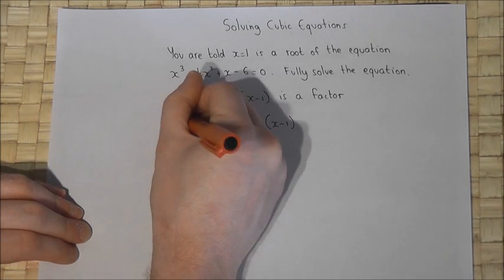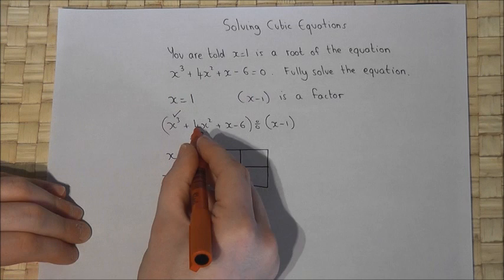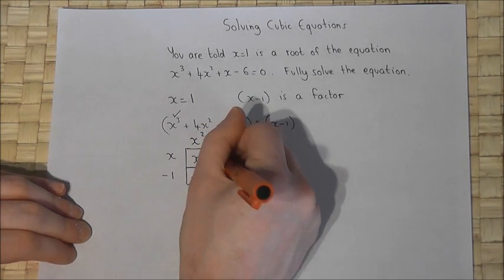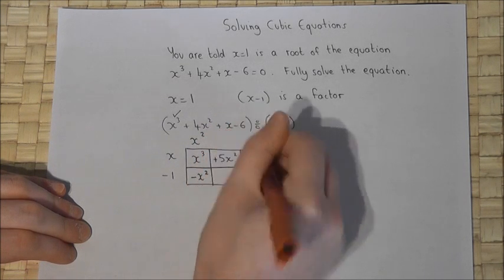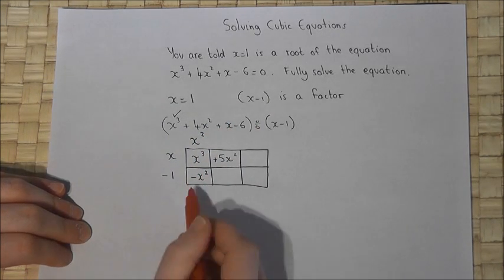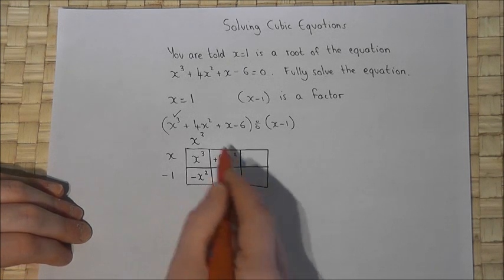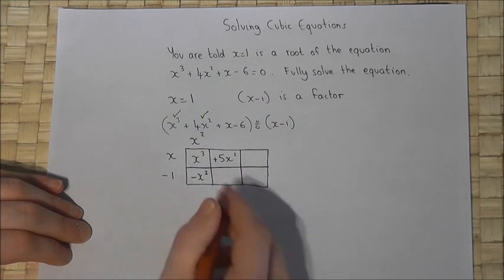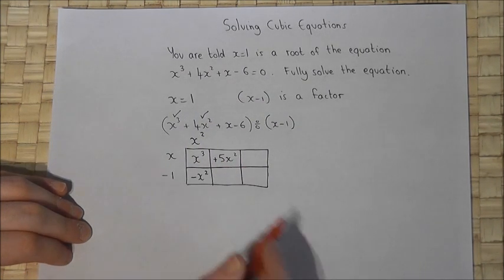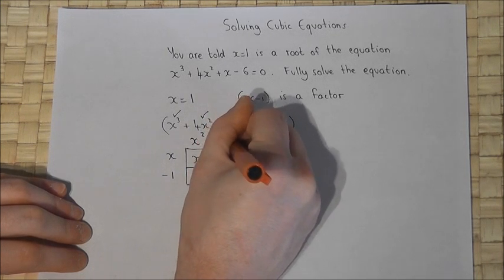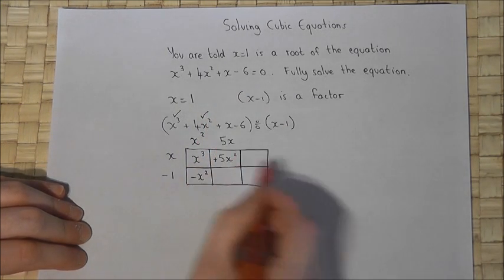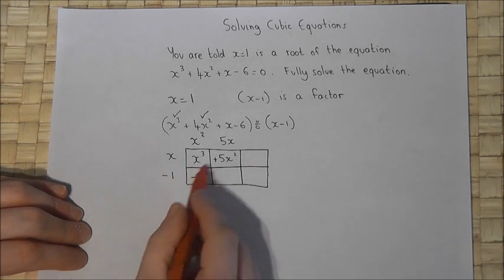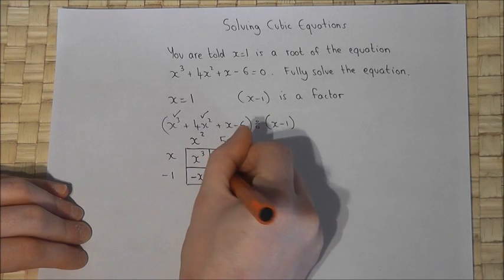Now I've got the x cubed term, but I want a 4x squared. I've got a minus x squared, so if I add 5x squared in this diagonal, minus x squared plus 5x squared gives me the 4x squared. But to get that, I have an x, so I need a 5x. x times 5x is 5x squared. However, there's a minus 1. Minus 1 times 5x is minus 5x.